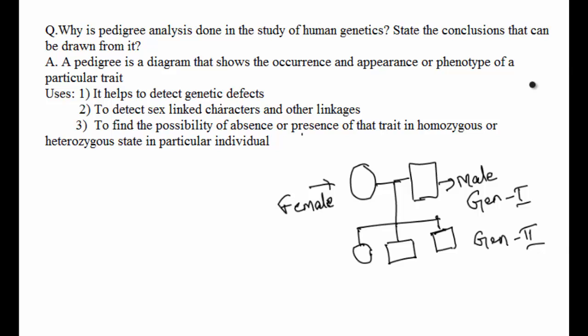A pedigree is a diagram that helps to detect genetic defects and also helps genetic counselors to guide couples about the possibility of having children with defects like hemophilia. It indicates that Mendel's principles are also applicable to human genetics with some modifications found later, like quantitative inheritance, sex-linked characters, and other linkages.